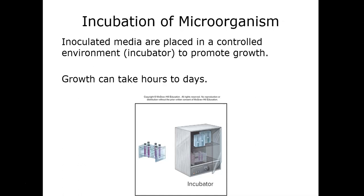Human pathogens prefer to grow at around 37°C, similar to the 98.6°F body temperature they encounter in the human body. Archaea classified as thermophiles or hyperthermophiles prefer temperatures around 42–45°C, much warmer than body temperature.